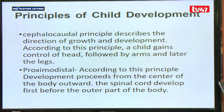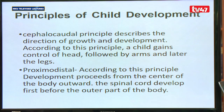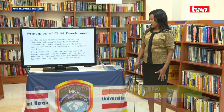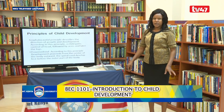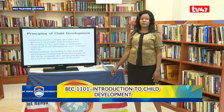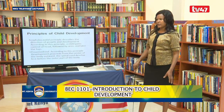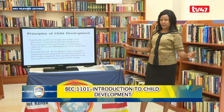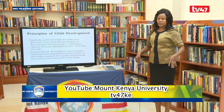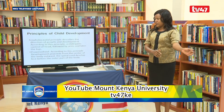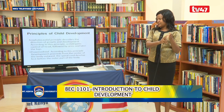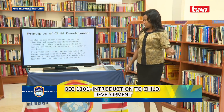The next principle is the proximodistal principle. This principle again describes direction of growth and development. According to this principle, growth and development proceeds from the center of the body outward. The center of the body — the part that develops first — is the spinal cord. From the spinal cord going outward, the arms develop first, followed by the hands, and the fingers will be the last to develop. That's why the ability to write comes last.